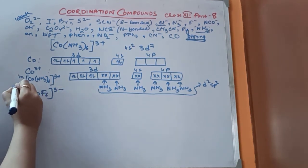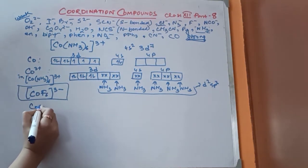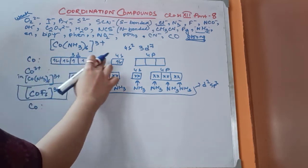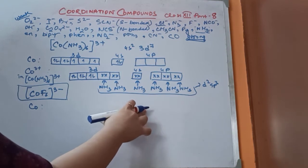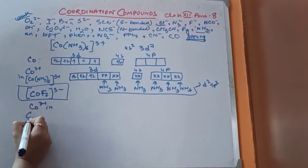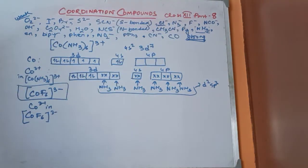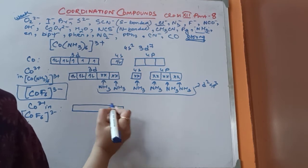Now in comparison, let's look at the complex CoF6 3 minus. Here also, cobalt is in the plus 3 oxidation state. Look at the position of fluoride — fluoride is a weak field ligand. Being a weak field ligand, it will not facilitate the pairing of electrons of the central metal.